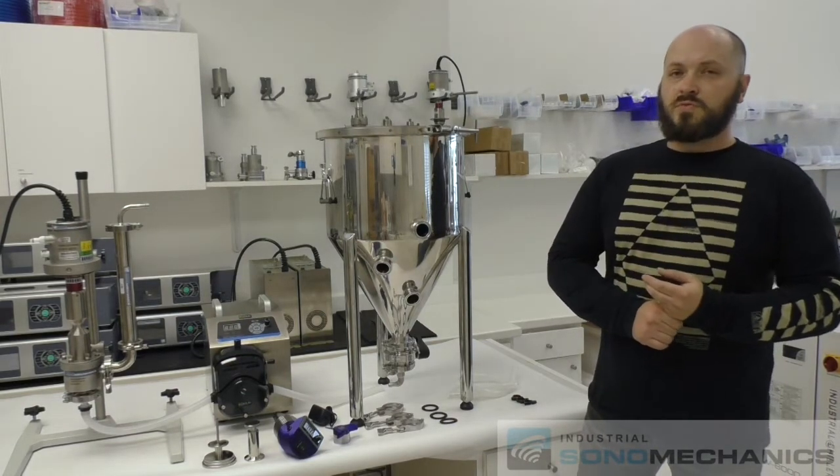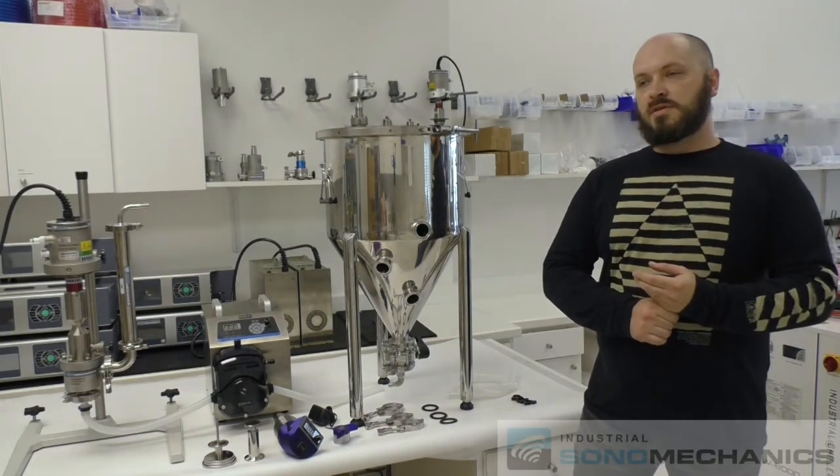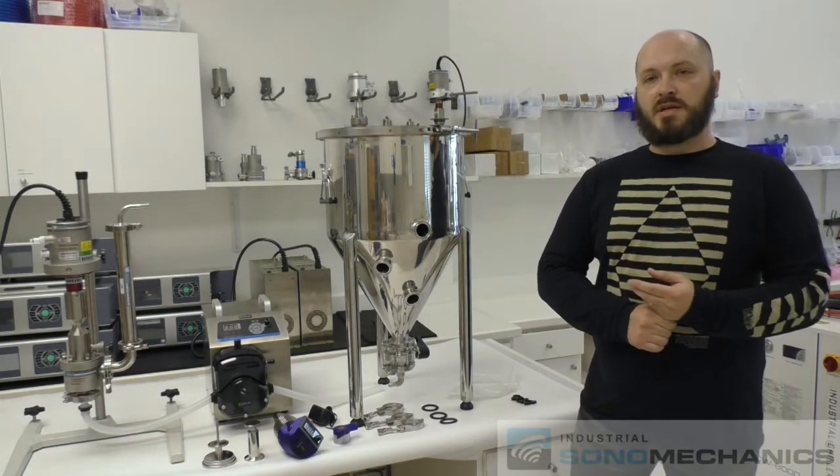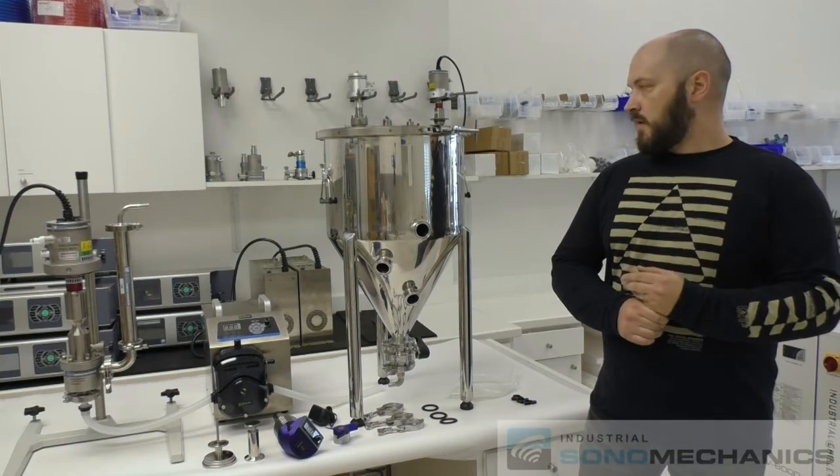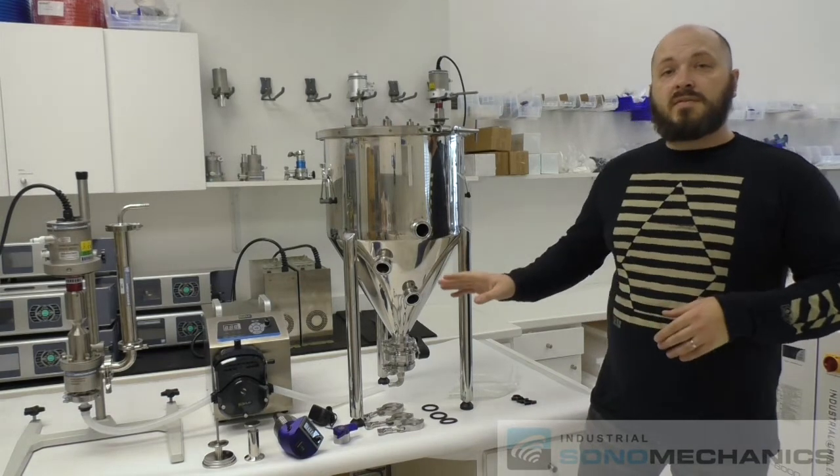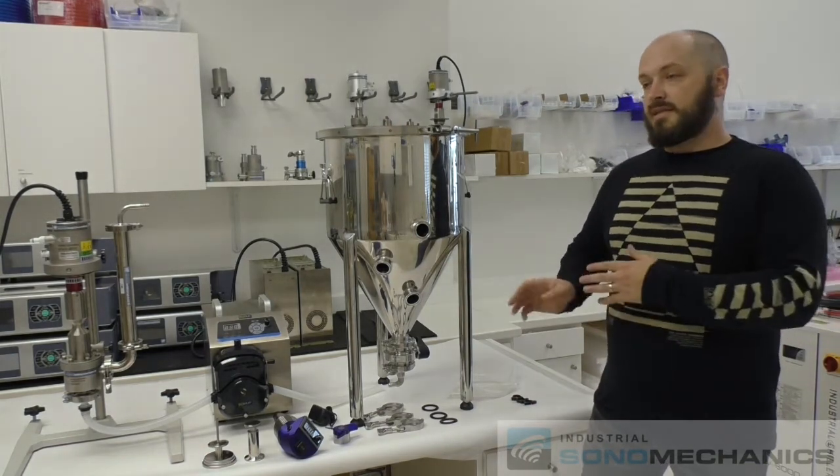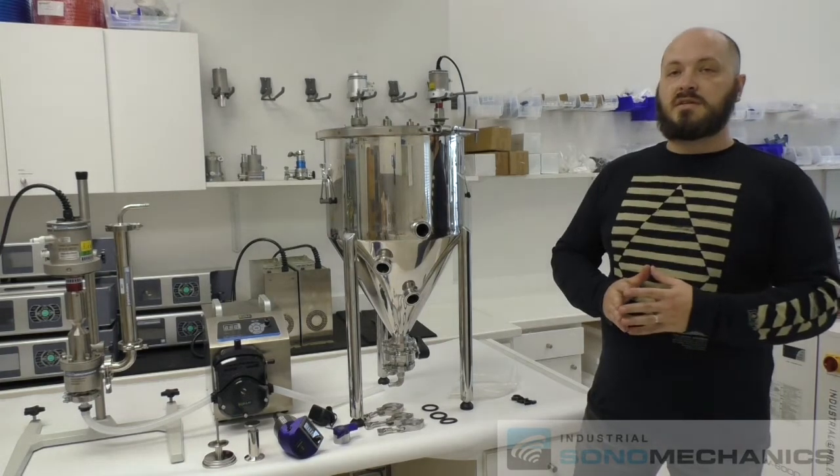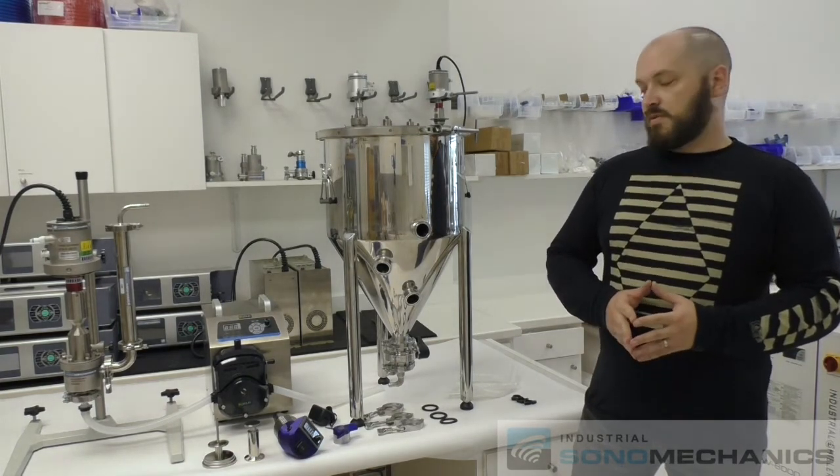This tank can be used with our ISP3000 system or BSP1200 in the flow-through mode. We also offer a 25 liter version of this tank and the assembly for that tank is exactly the same as this one so you can use this video as reference.